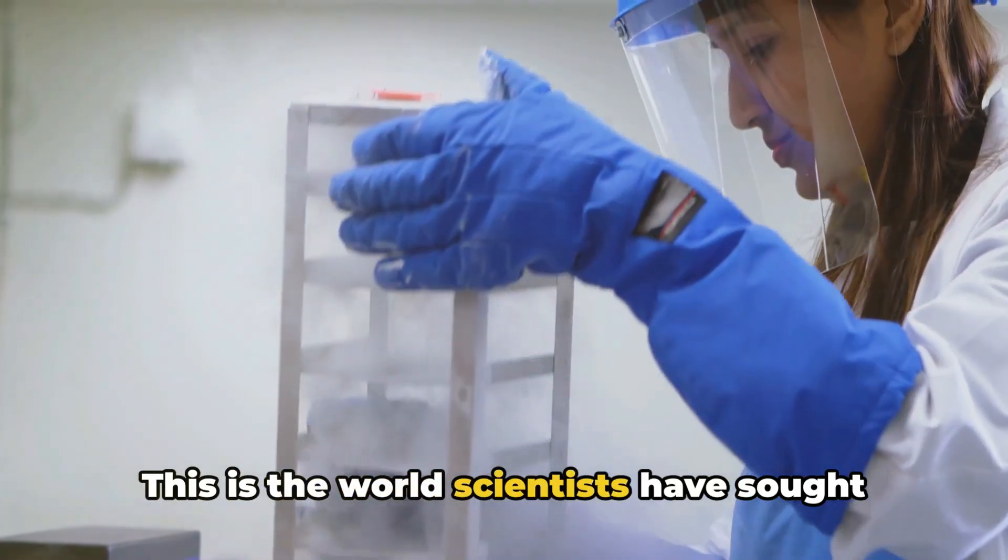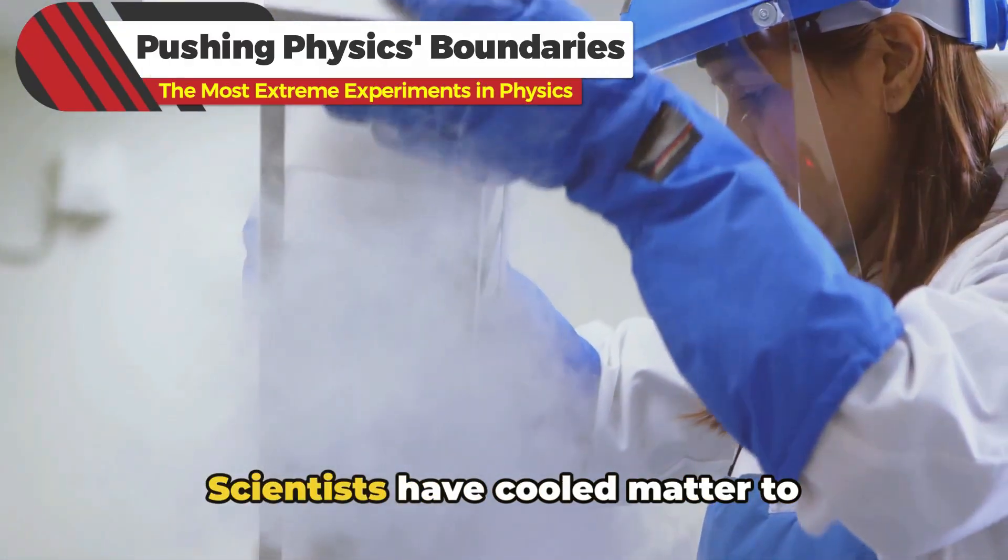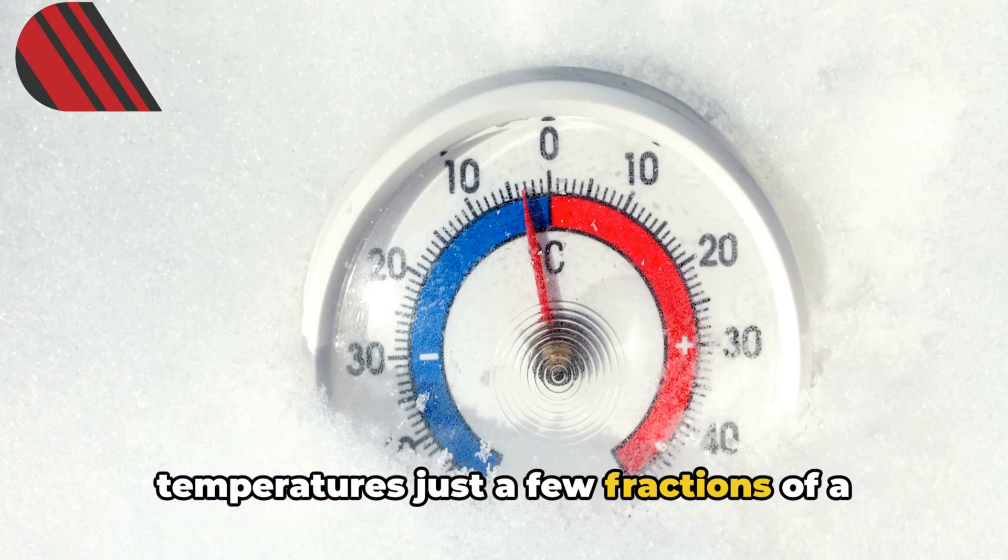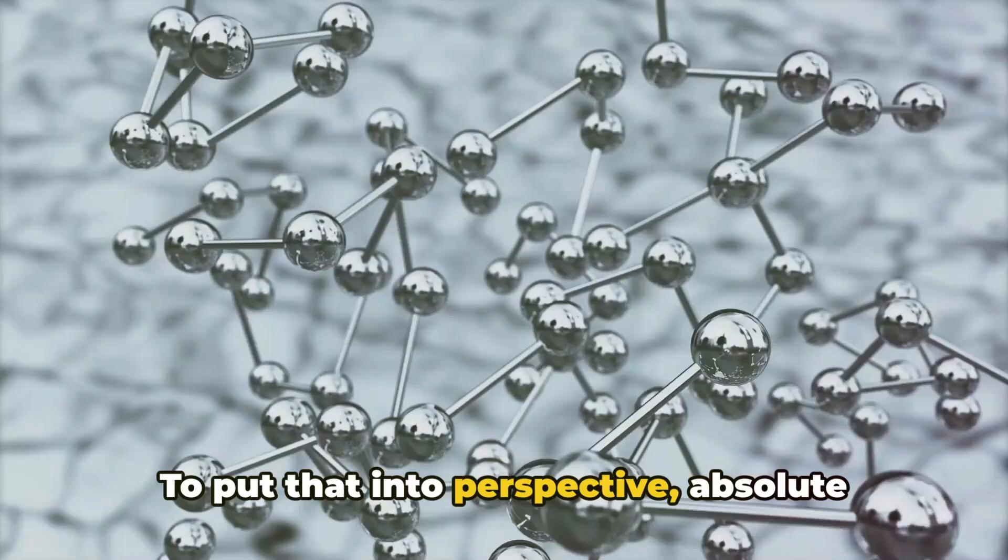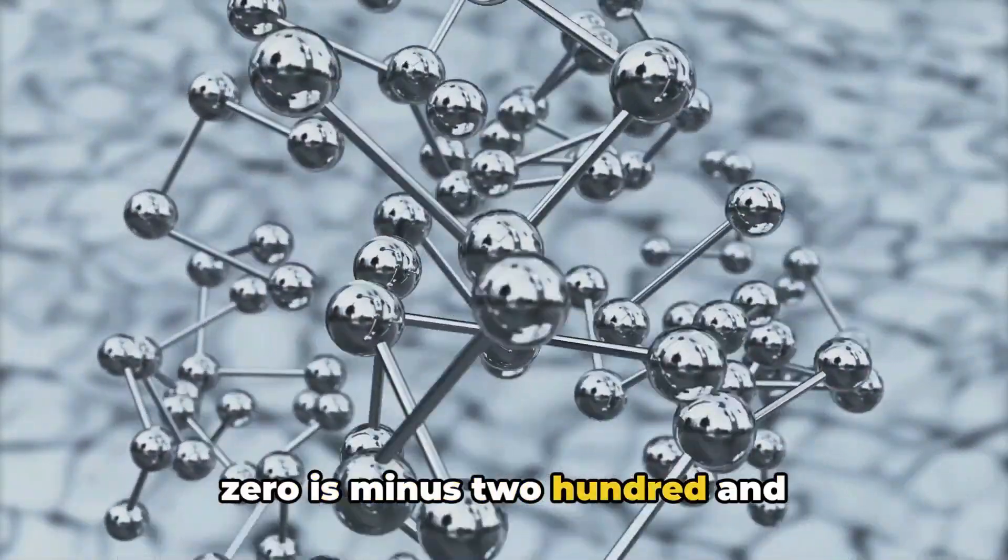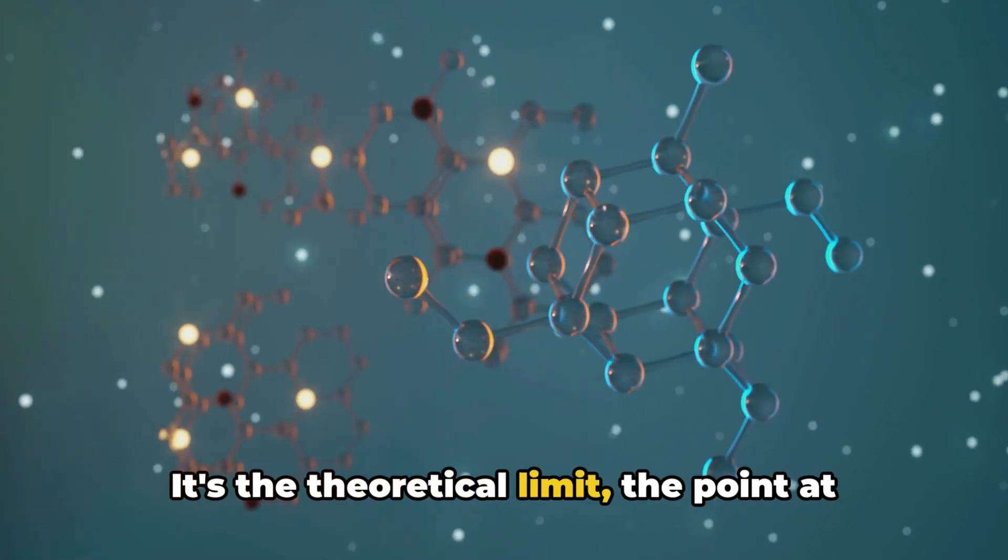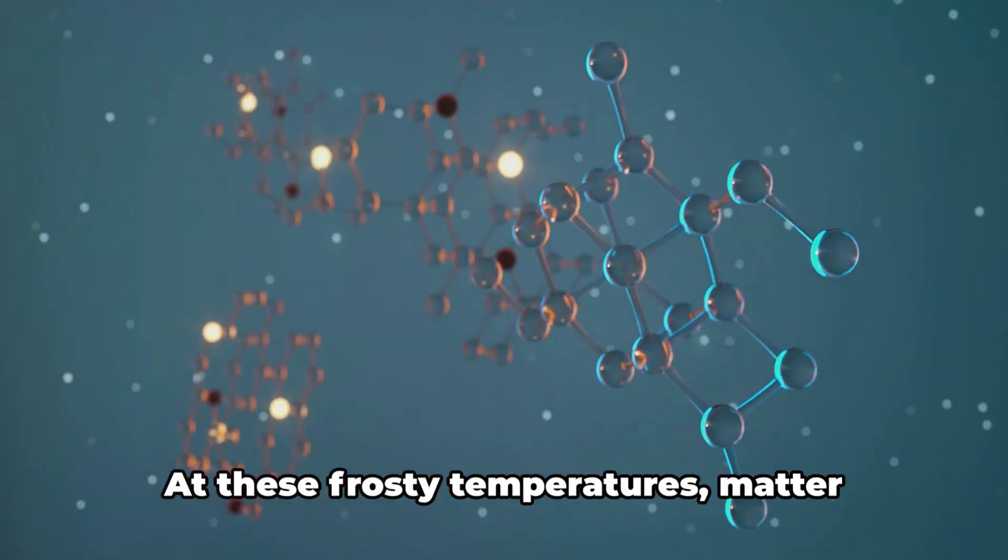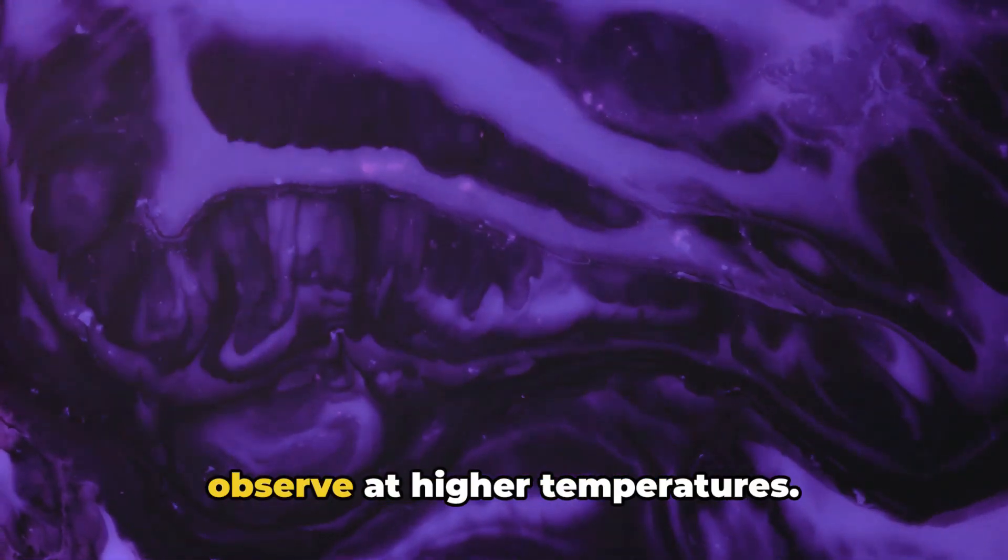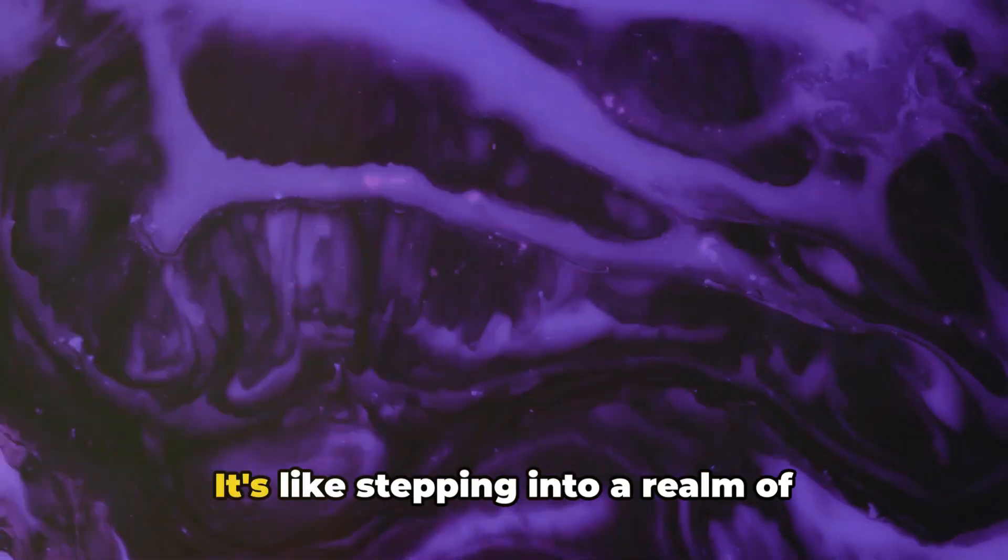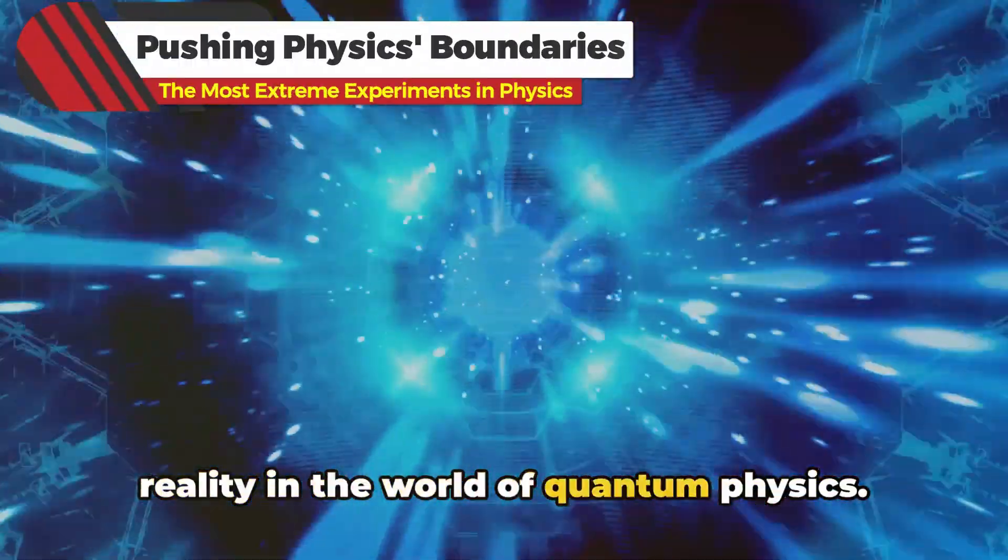This is the world scientists have sought to understand by achieving the coldest temperatures ever recorded. Scientists have cooled matter to temperatures just a few fractions of a degree above absolute zero. To put that into perspective, absolute zero is minus 273.15 degrees Celsius, the theoretical limit where atoms stop moving entirely. At these frosty temperatures, matter behaves in ways that are impossible to observe at higher temperatures. It's like stepping into a realm of science fiction, but it's very much a reality in the world of quantum physics.